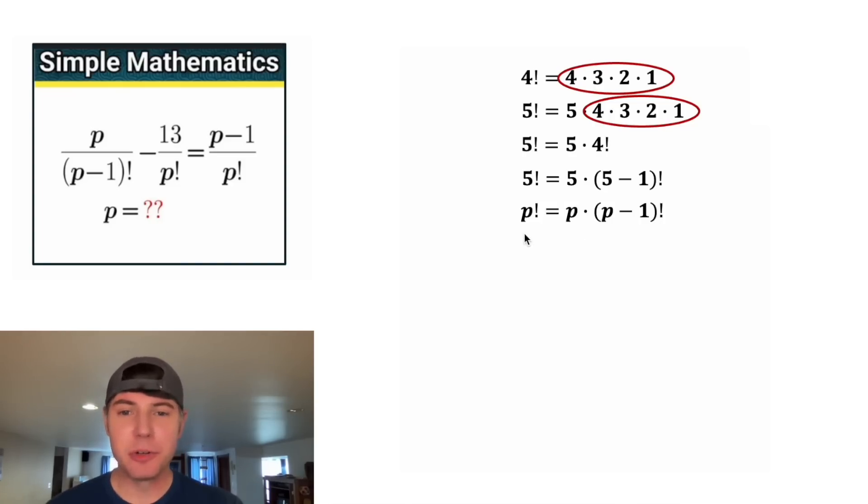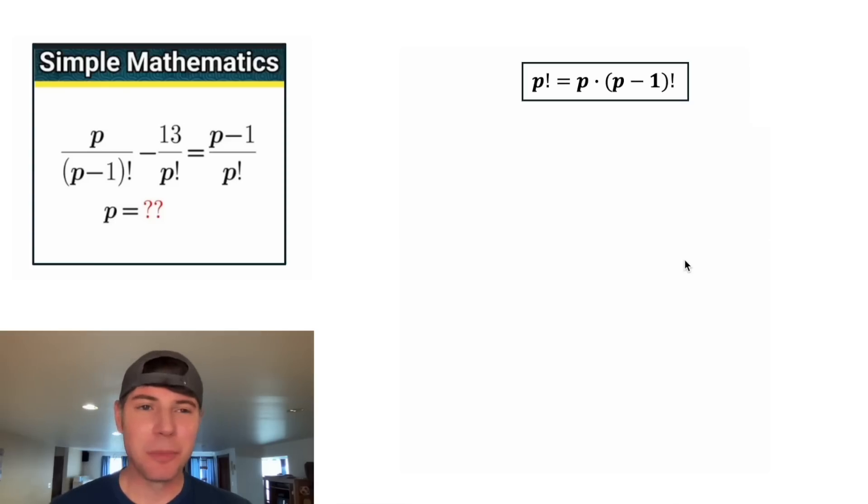And another way to think of that is five factorial is equal to five times five minus one factorial. And in general, this will be true for any whole number P. You can say P factorial equals P times P minus one factorial. And this looks important. Let's put a box around it.